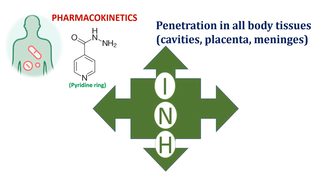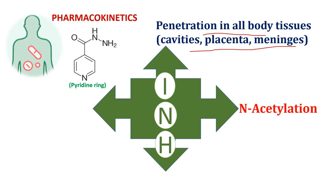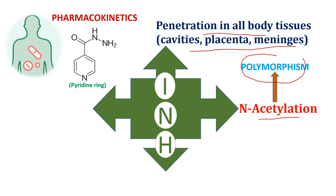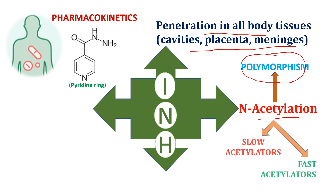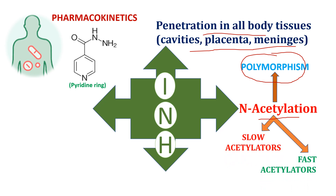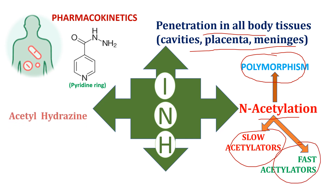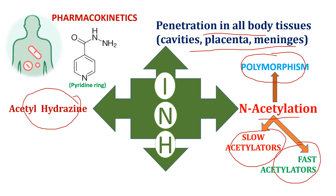Isoniazid has penetration into all body tissues, cavities, placenta, and meninges. It is mainly metabolized by the process of N-acetylation. In this case, the phenomenon of polymorphism is seen, where two types of patients are there: slow acetylators and fast acetylators. The main metabolite of isoniazid is acetylhydrazine.